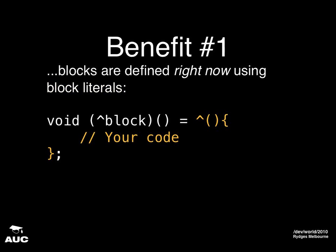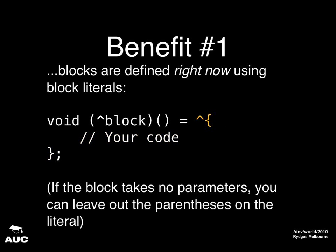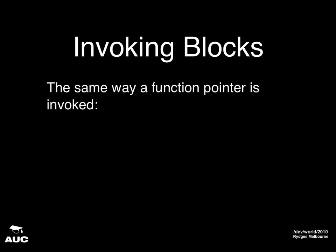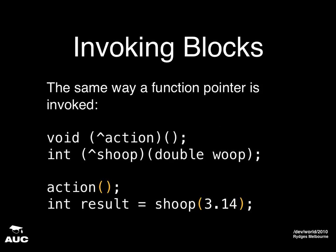Suppose we have our block variable defined as something that takes no parameters and returns nothing. We can give it a value like this — dead simple. We have the caret, a list of parameters in parentheses, and then curly brackets where the code goes. If we don't take any parameters, we can just leave the brackets out. Here's another example: a block that takes an NSArray as a parameter and returns an integer. We don't actually say what the return type is on the block literal — that's part of the type of the variable we assign it to. Invoking blocks is a lot like invoking function pointers: you just use parentheses to call it like a function.